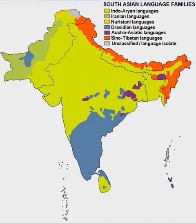The earliest records in Old Tamil are short inscriptions from around the 2nd century BCE in caves and on pottery. These inscriptions are written in a variant of the Brahmi script called Tamil Brahmi. The earliest long text in Old Tamil is the Tolkappiyam, an early work on Tamil grammar and poetics, whose oldest layers could be as old as the 1st century BCE. A large number of literary works in Old Tamil have also survived, including a corpus of 2,381 poems collectively known as Sangam literature.